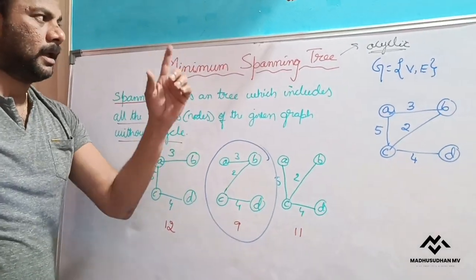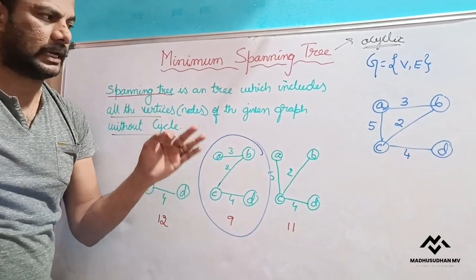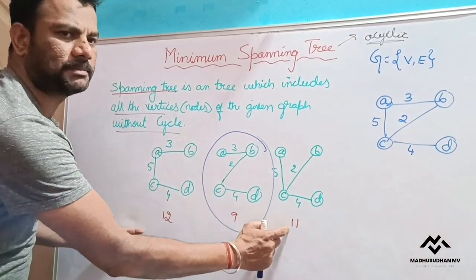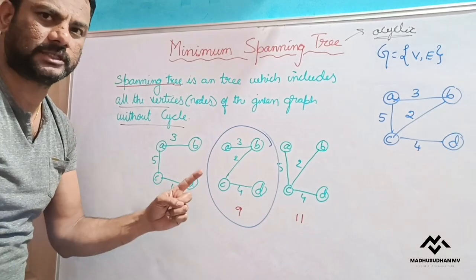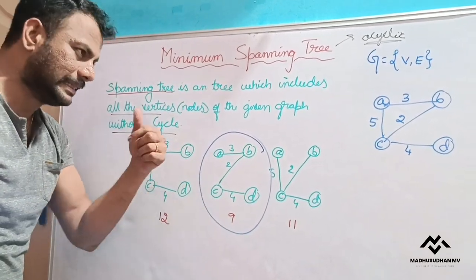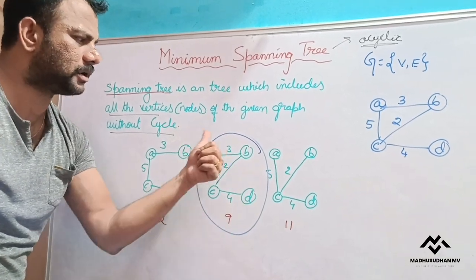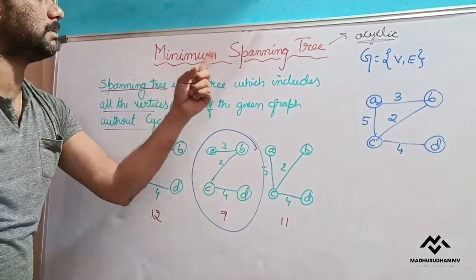Again, in order to consider minimum spanning tree, we are using greedy technique. Greedy technique is used to obtain optimal solution. See, all these are feasible solutions. Out of all feasible solutions, we are selecting one feasible solution which is satisfying the objective of the problem. In this problem, the objective is minimum. So whichever spanning tree gives minimum total, that will be the minimum spanning tree.